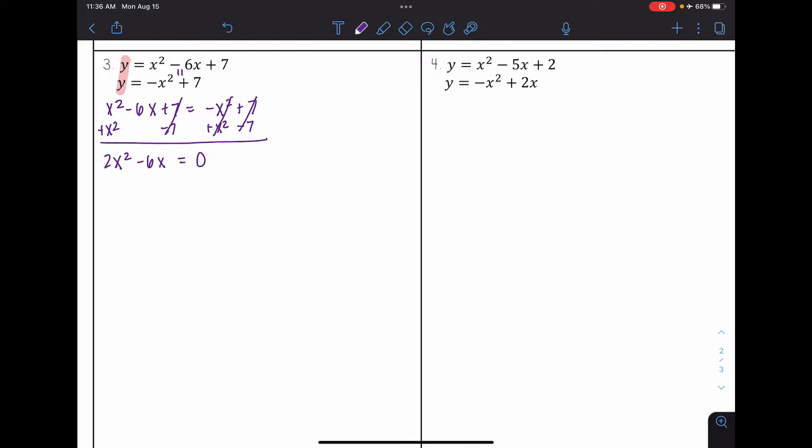Now I want to solve this quadratic. Here I have two terms, and I see that I have a GCF of 2x. So I'm going to factor out a 2x, and when I factor that out, I'm left with x minus 3.